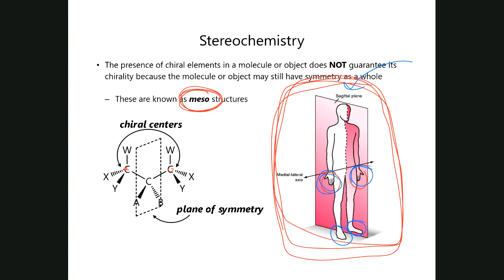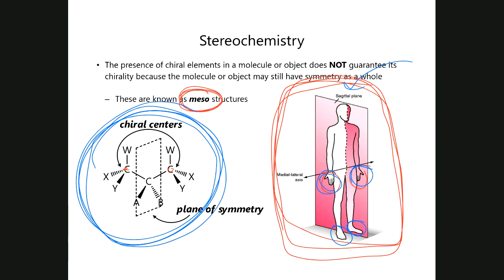So technically, the human body is a meso structure. You can bring this all the way down to the smallest possible pieces that exist in nature, which are molecules. There are many molecules we're going to see that have chirality centers, but the structures as a whole are achiral.